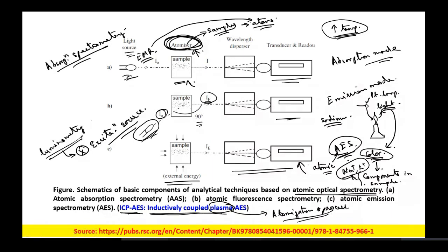Why is it called atomic optical spectrometry? Atomic — because using the atomizer, we are converting the samples into the relevant atoms. Optical — we are dealing with visible light, whether it is being absorbed or emitted by the sample. And spectrometry means recording the spectrum with respect to wavelength.